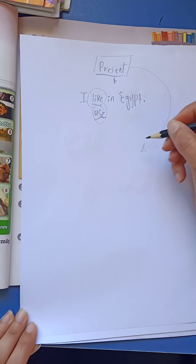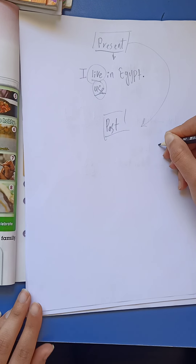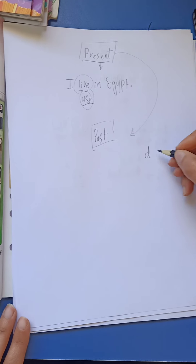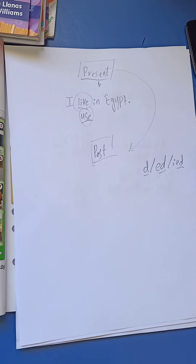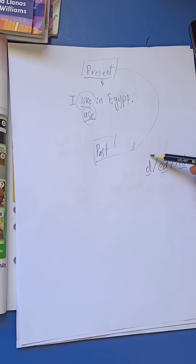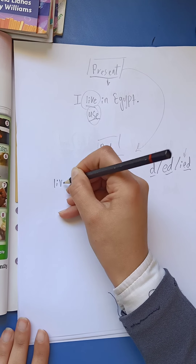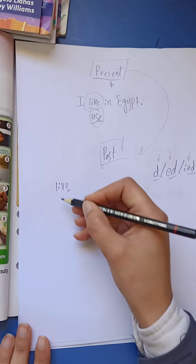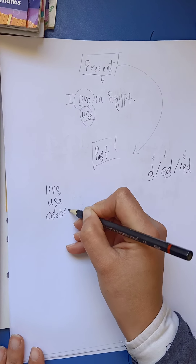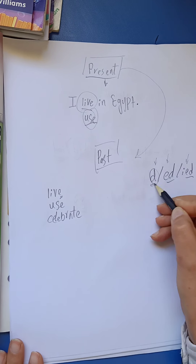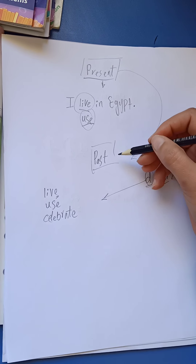When we need to transfer a verb to the past tense, we just add D, ED, or IED. These are the conditions. When the verb ends with E — like live, use, celebrate — we add D.